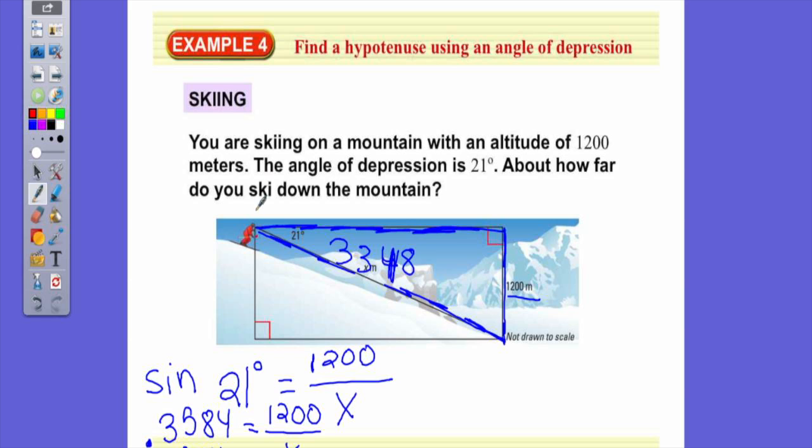Now, you could have also used this triangle. But now, this is a 90-degree angle. So part of it is 21. What is the complement to the 21-degree angle? 69. And if this is 1,200 meters, this is 1,200 meters, correct? So now, 1,200 is your adjacent length. The hypotenuse is still X.